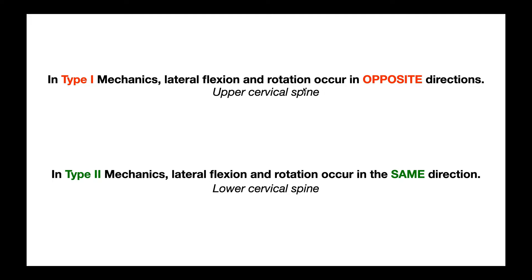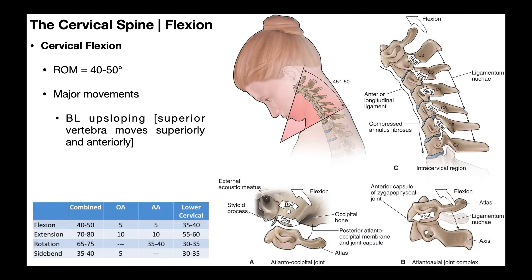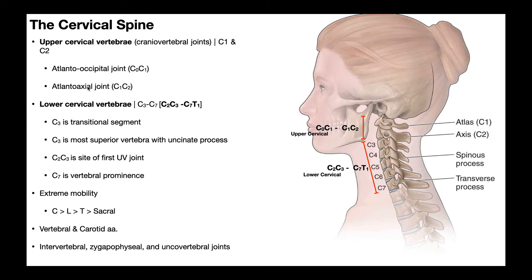The upper cervical spine has type 1 mechanics, where lateral flexion and rotation occur in opposite directions. The way to remember it: type 1 — one is an odd number — so lateral flexion and rotation are at odds, meaning opposite directions. Type 2 is even, so same direction. In the upper cervical spine, if I laterally flex to the right, there's actually going to be left rotation, and that applies just to those upper two segments: the atlano-occipital joint and the atlano-axial joint.